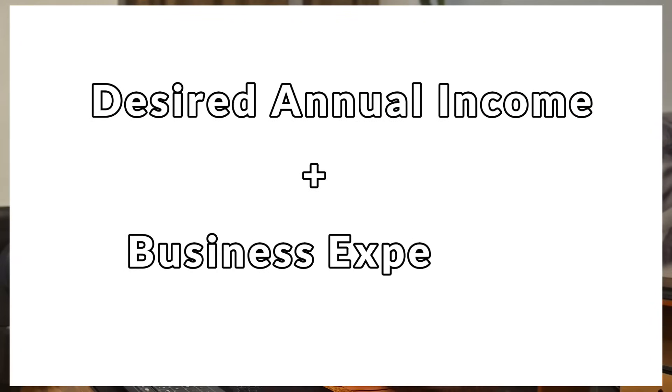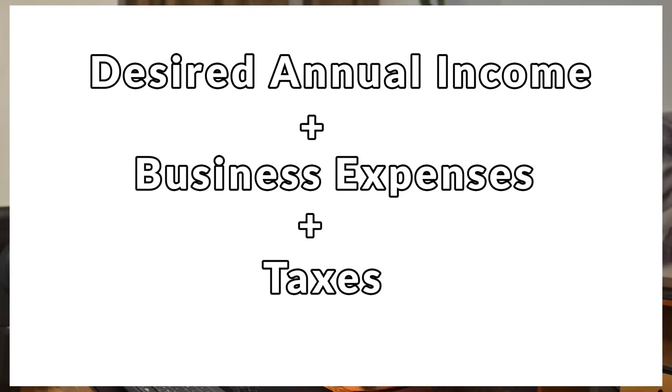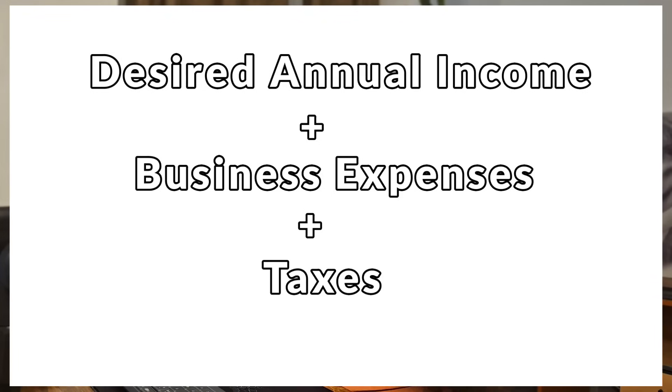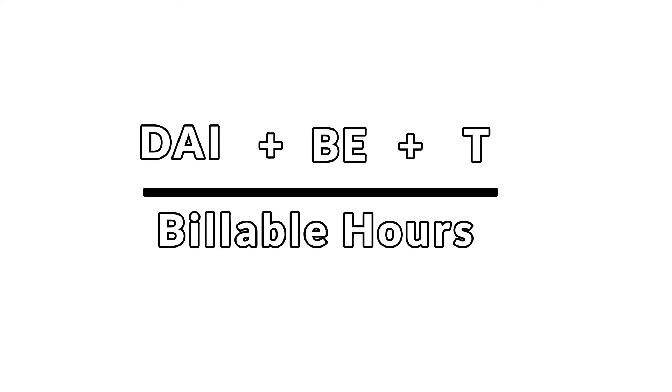So how do you know what to actually charge? Here's a simple formula. Take your desired annual income, plus your business expenses — internet, transport, printing, any kind of expense — plus taxes. For example, if you're in a country with a 15% or 16% tax rate, put that into consideration. Divide the total by your billable hours in a year, and that should give you your hourly rate.